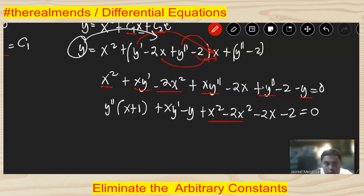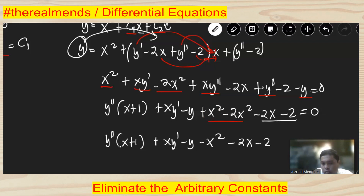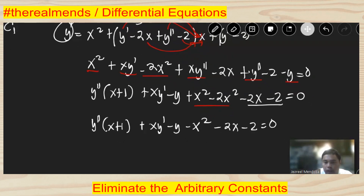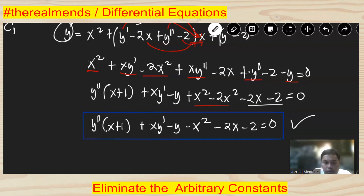So our final answer is: (x plus 1)·y double prime plus x·y prime minus y minus x squared minus 2x minus 2 equals 0. Notice that the arbitrary constants c1 and c2 are now completely eliminated, and the answer is expressed only in terms of y double prime, y prime, y, and x.